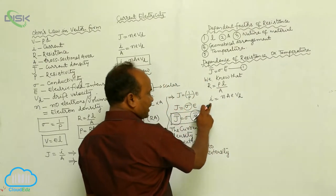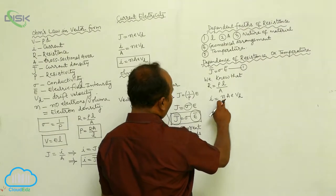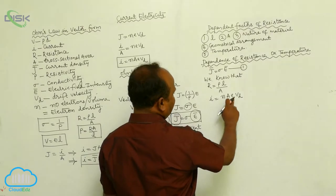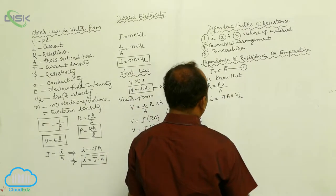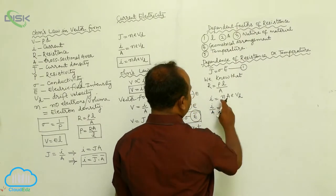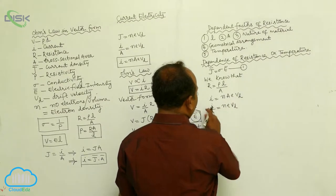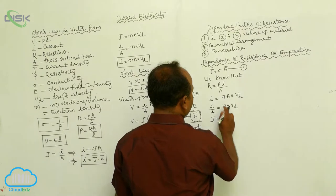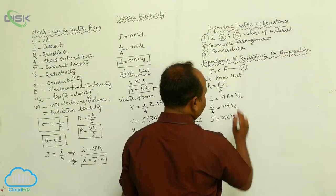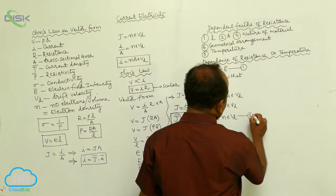What is I? I is current. What is N? N is the number of electrons per unit volume. What is A? A is the cross-sectional area. E is the charge, V is the drift speed. Now I by A is equals to N E V D. I by A is equals to J is equals to N E V D. This is called the second equation.